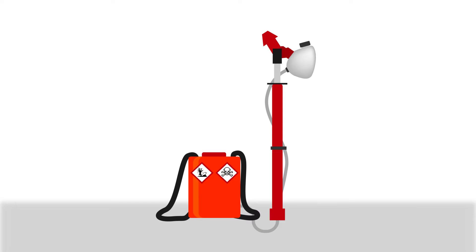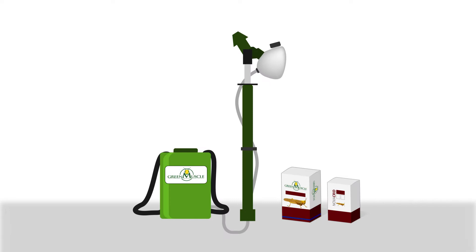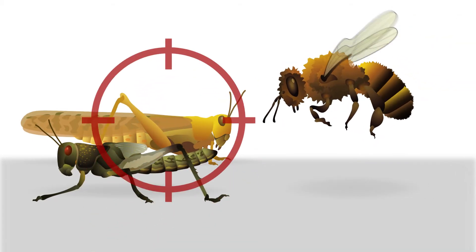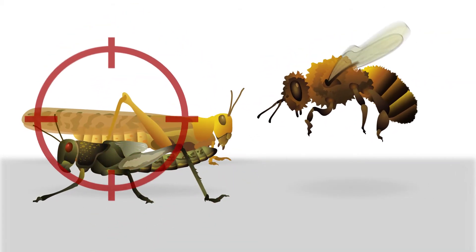An alternative low-risk way to control locusts is to use biological pest control products such as Green Muscle. Green Muscle is made from the spores of a naturally occurring fungus which attacks only locusts and grasshoppers.